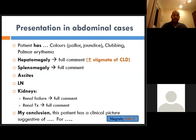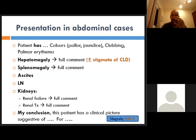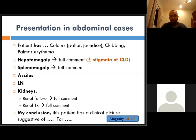In cases of liver disease, either we have chronic liver disease with stigmata, or isolated hepatomegaly, or isolated splenomegaly, or hepatosplenomegaly, or hepatosplenomegaly with lymphadenopathy.